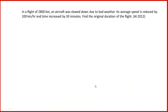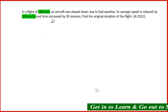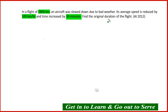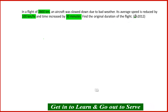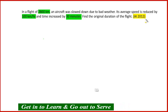Here is the first question on the screen. In a flight of 2800 km, an aircraft was slowed down due to bad weather. Its average speed is reduced by 100 km per hour and the time increased by 30 minutes. Find the original duration of the flight. This question was asked in the All India 2012 examination.